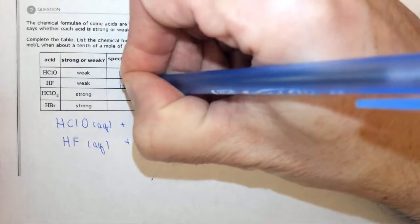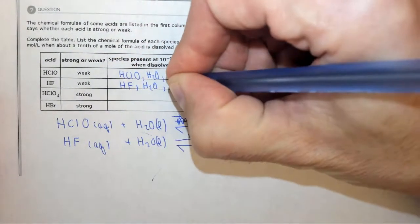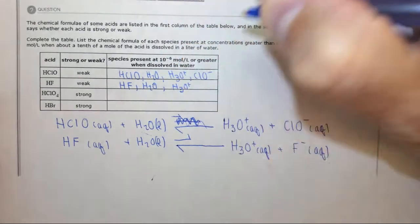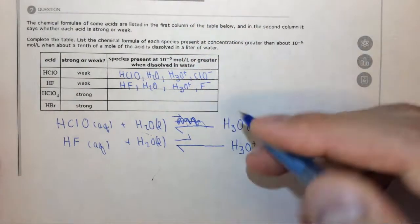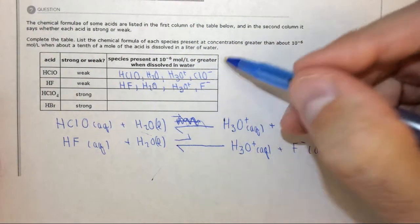So HF, H2O, H3O plus, and F minus, and again copy and paste seem to work a little bit better.